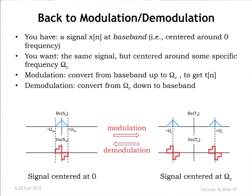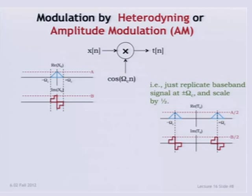Let's get back to talking about modulation and demodulation. If you have questions on what I talked about, you can bring them up in recitation. To review where we are: we've got some signal x of n at baseband — baseband just means its frequency content is centered around zero. You've been allotted some part of the frequency axis to do your transmission in. So you want to send that signal in another frequency band. Modulation was the process by which we converted up to some carrier frequency, and demodulation was what you did at the receiver to get back down.